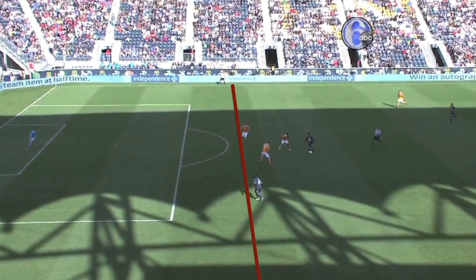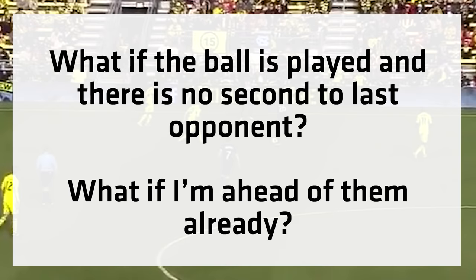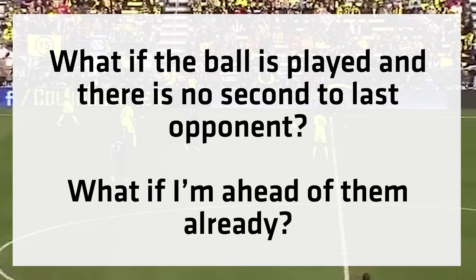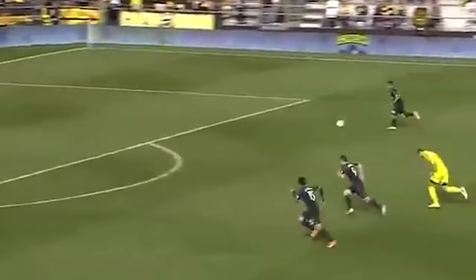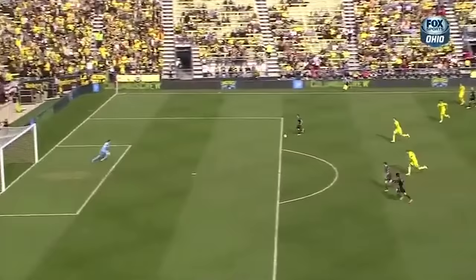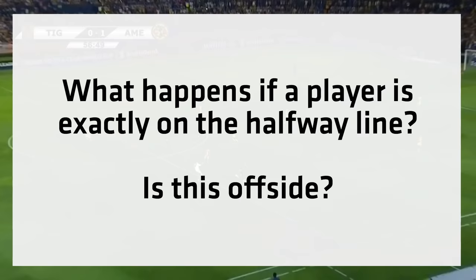That's literally it in a nutshell, but I know some of you have some hypothetical grey area questions. What if the ball is played and there is no second to last opponent? What if I'm ahead of them already? If that's the case, the line of the ball is used instead of the line of the second to last opponent. So the same rules apply – anywhere behind the line of the ball is onside, anywhere in front of the ball is offside.